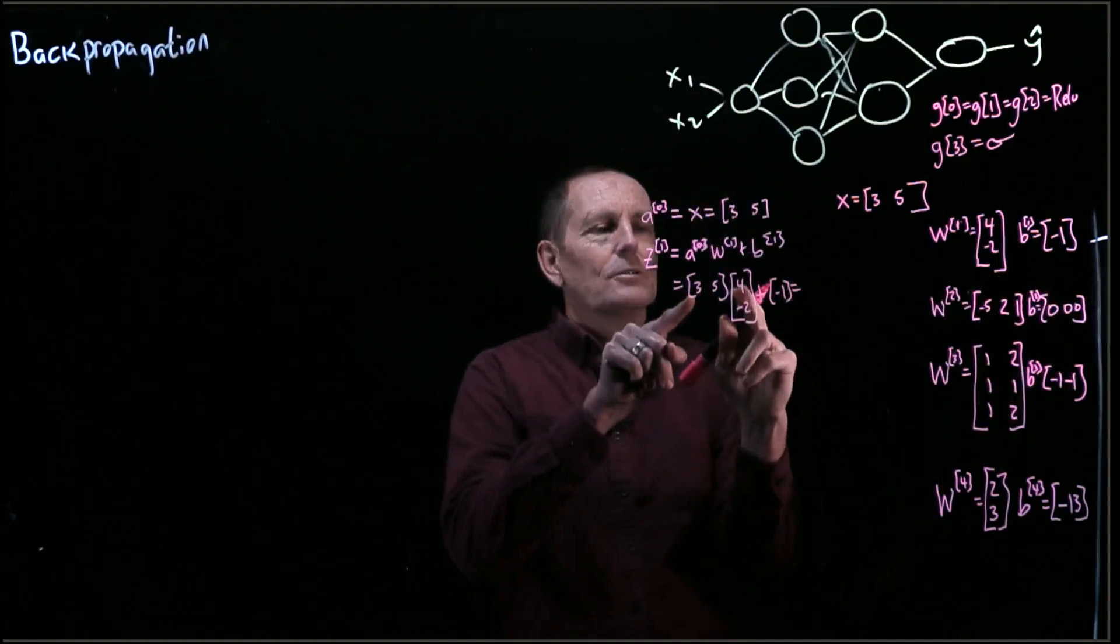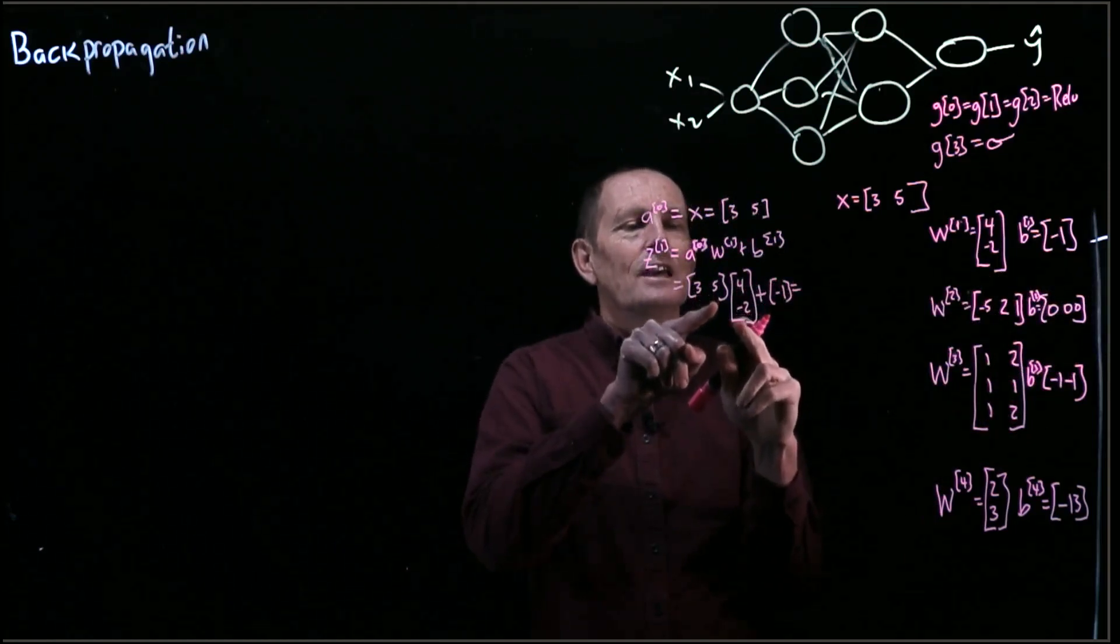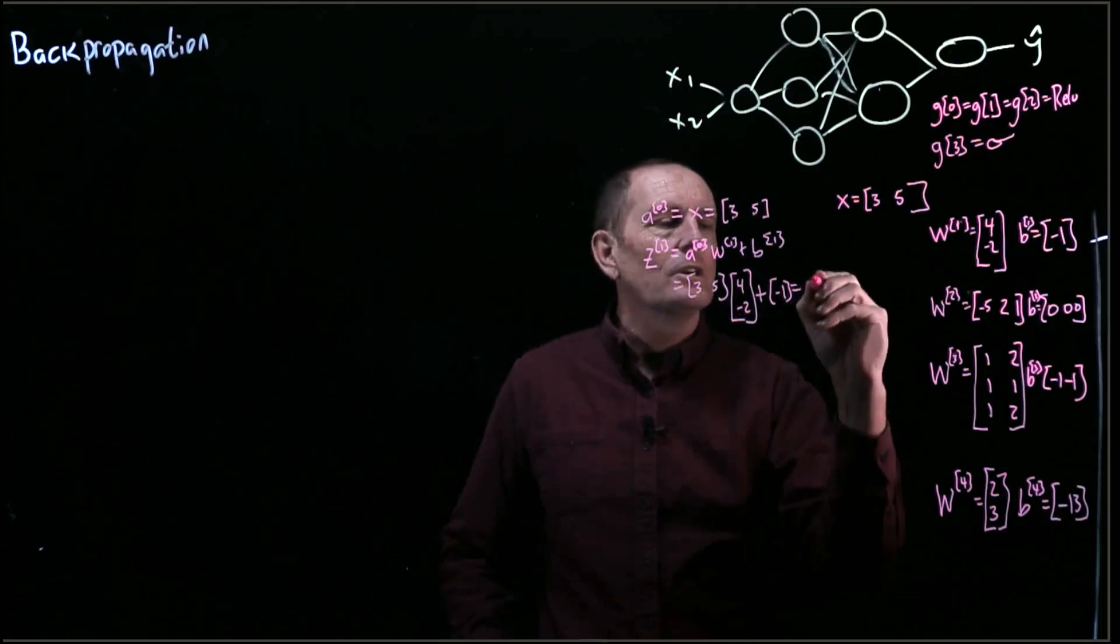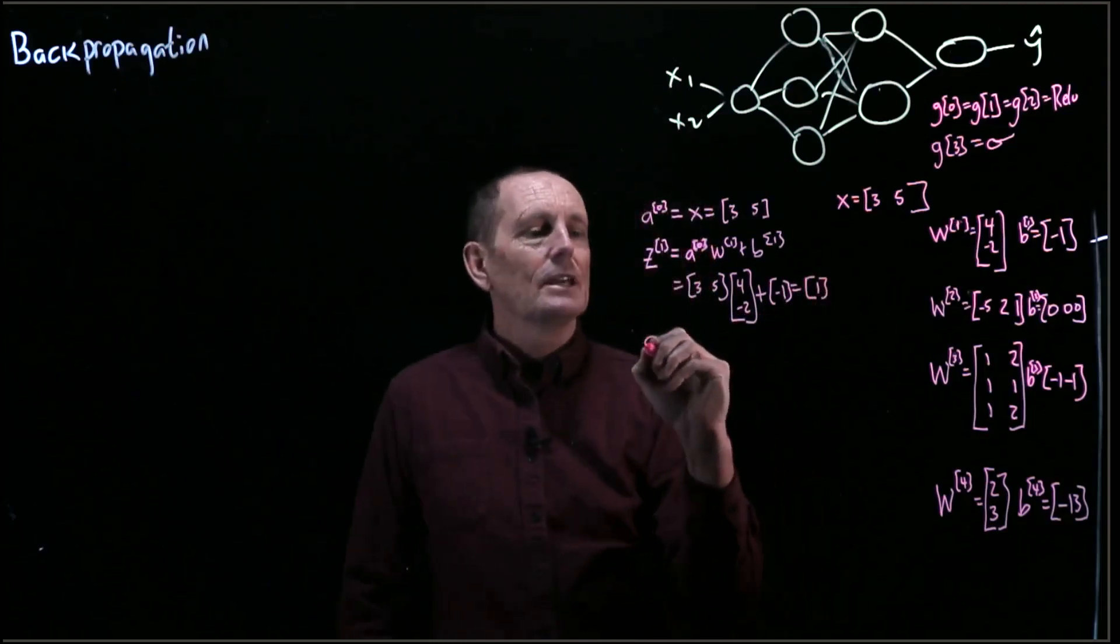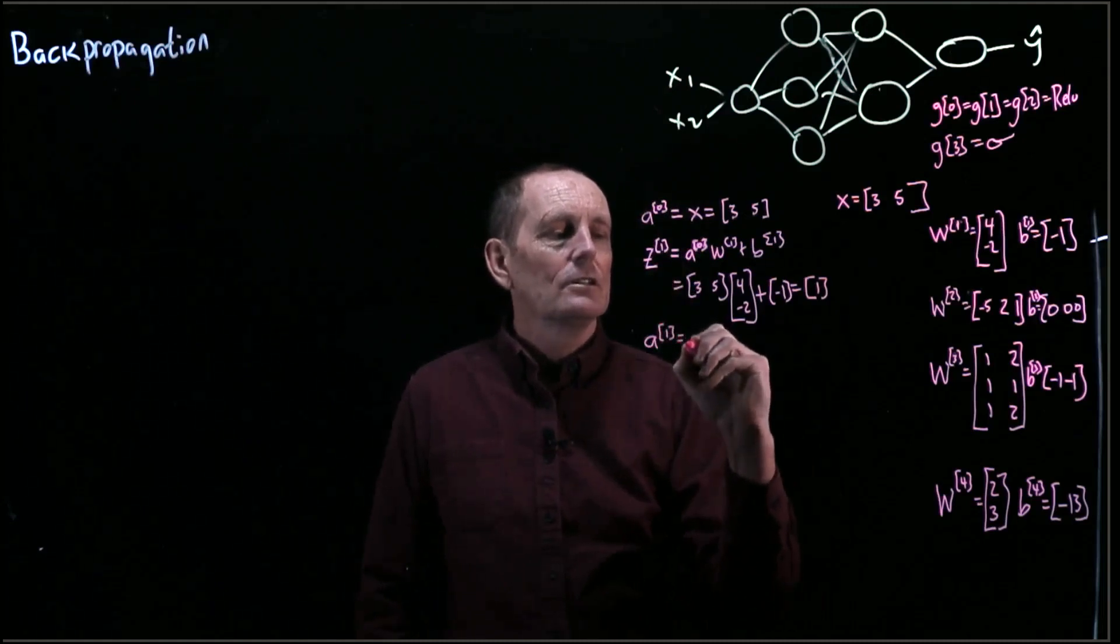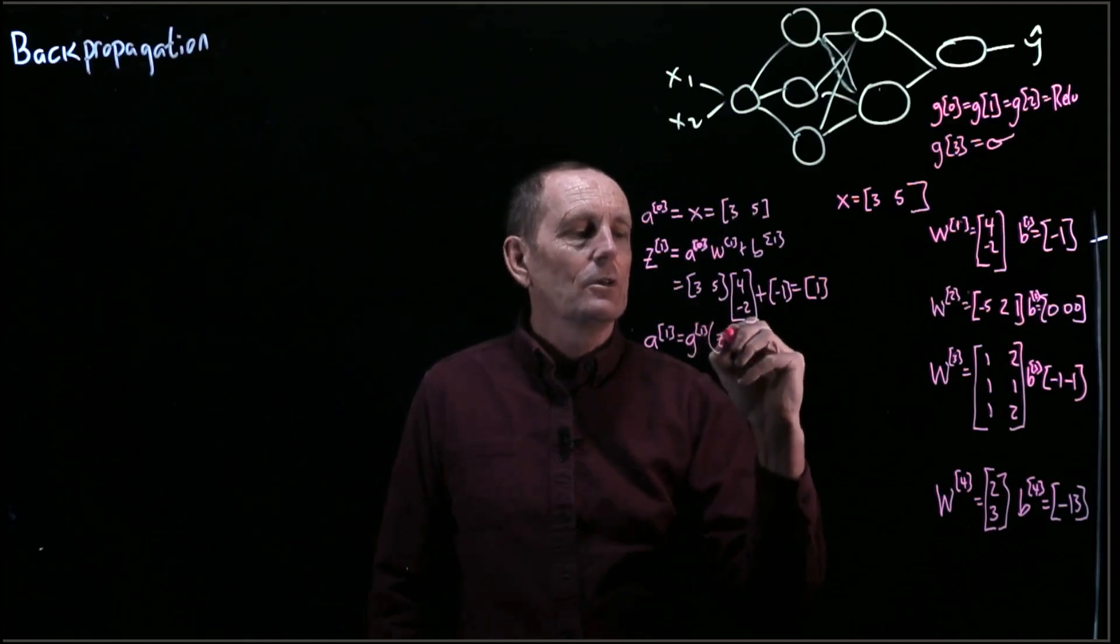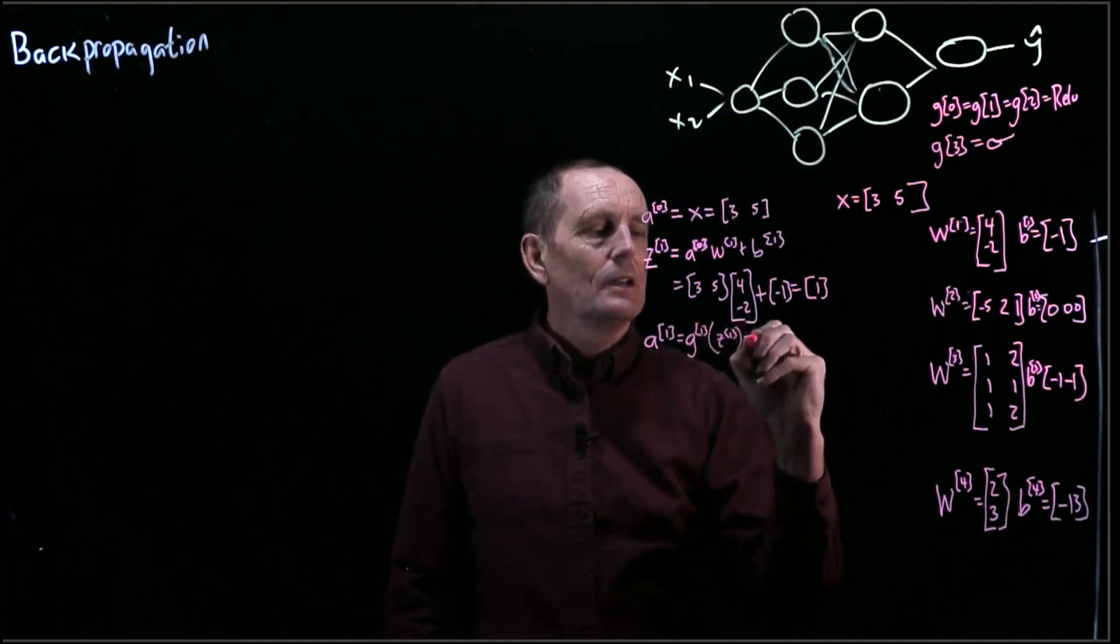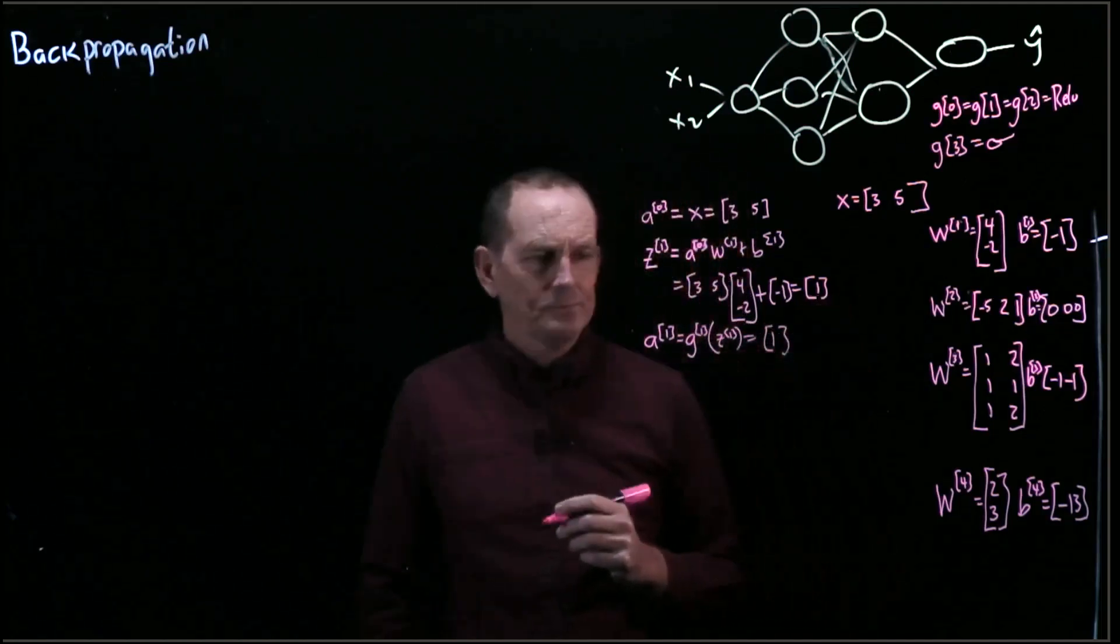And that equals 3 times 4 is 12, plus 5 times negative 2 is negative 10. So that's 2 plus negative 1 is 1. And now we can apply the ReLU function. So that is G at 1 of Z at 1, and that equals 1, because 1 is greater than equal to 0.